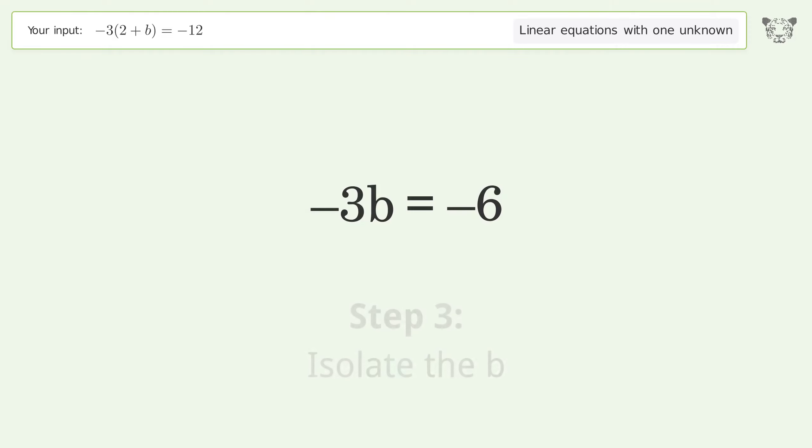Isolate the b. Divide both sides by negative 3. Cancel out the negatives. Simplify the fraction.